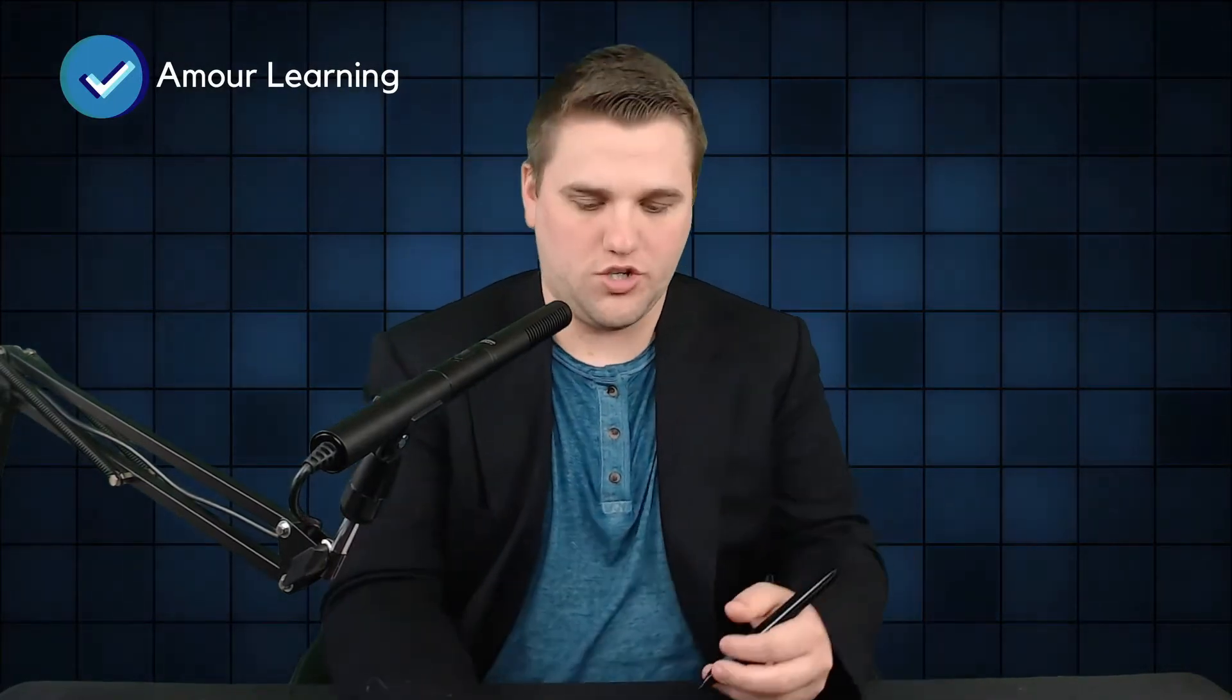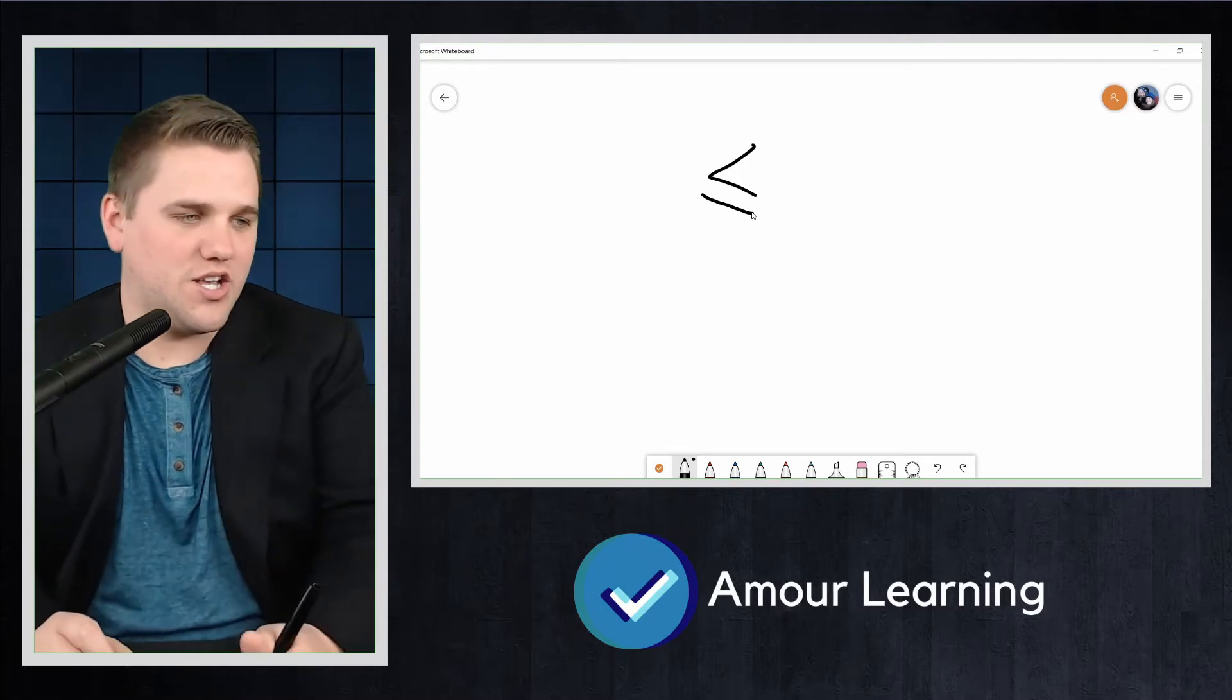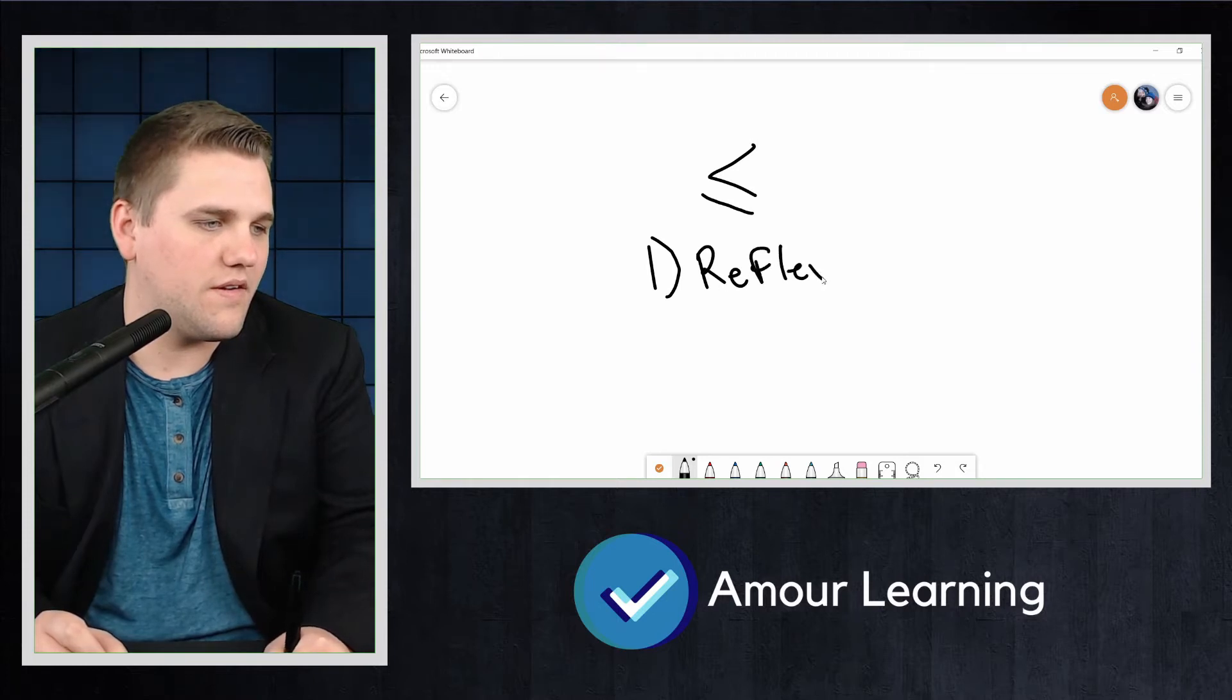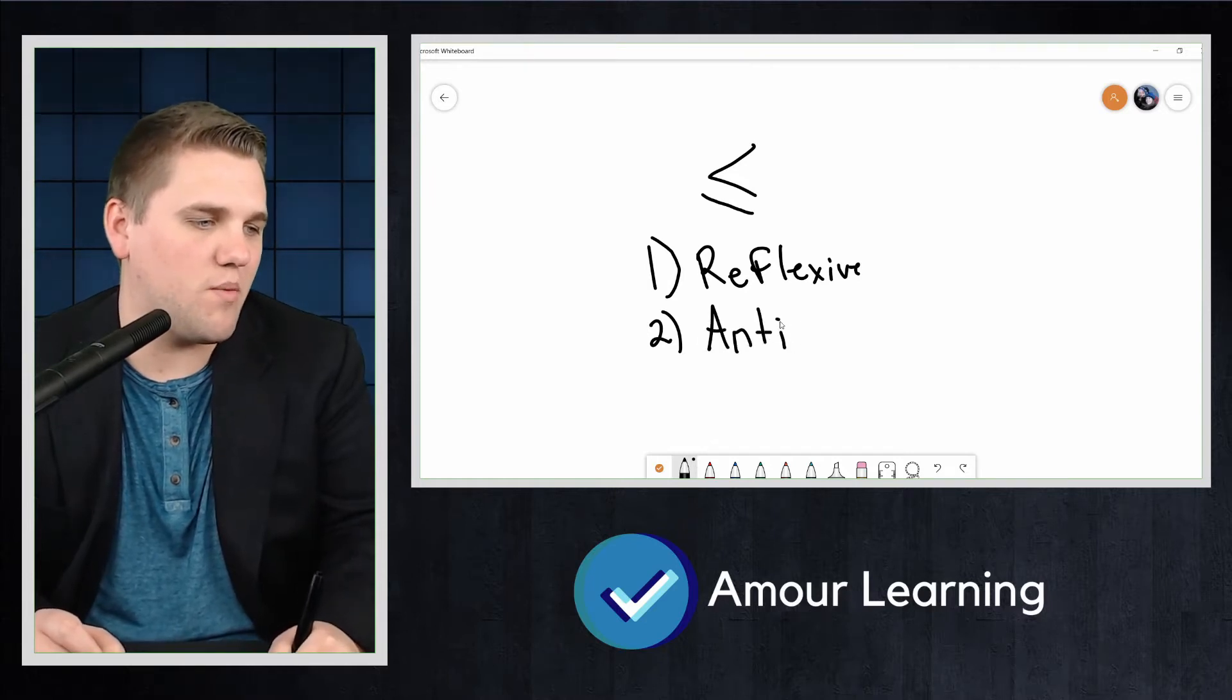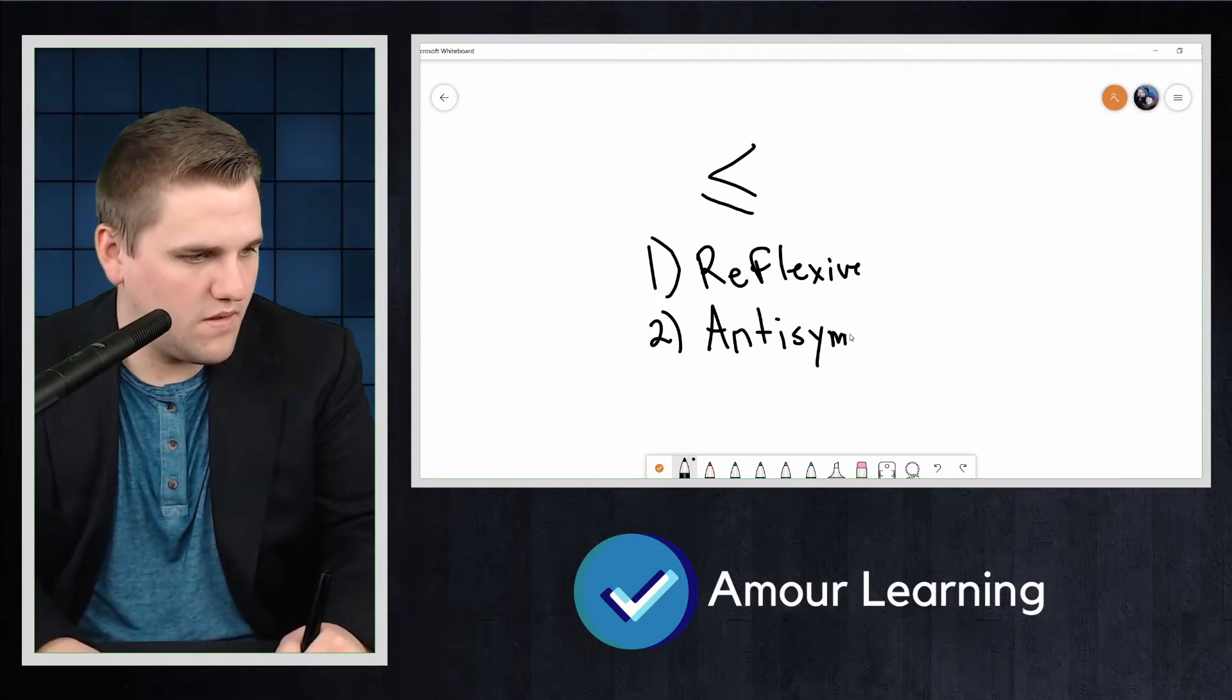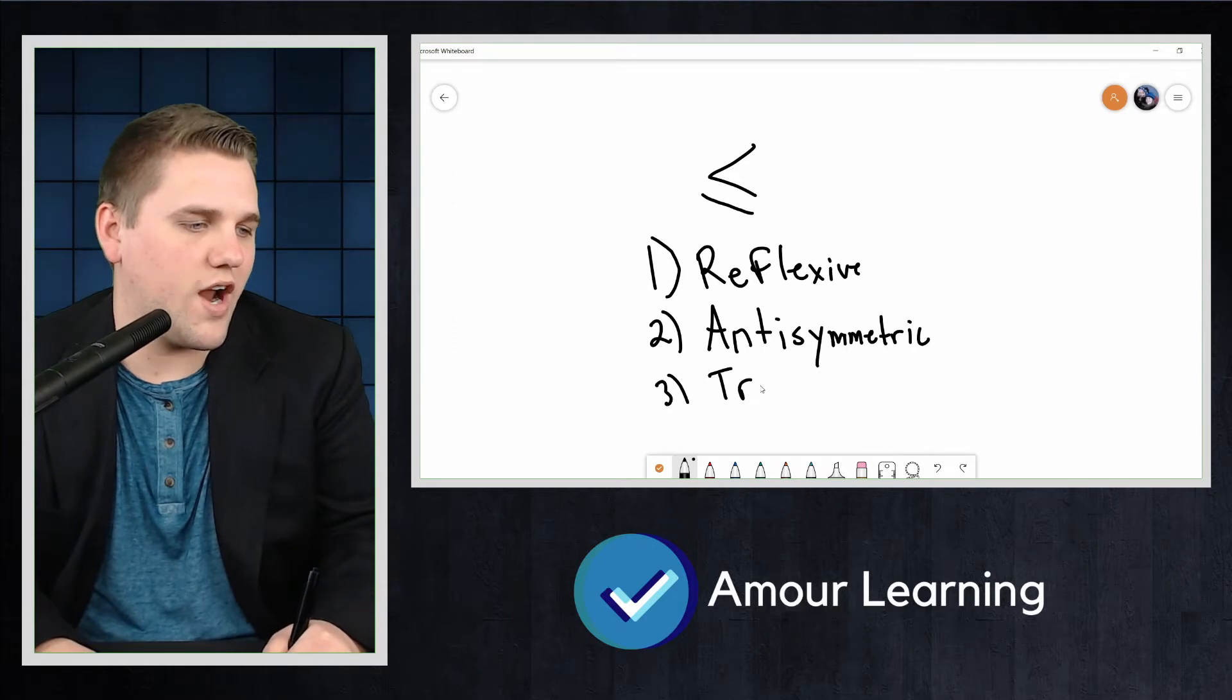Now, technically, the less than symbol is still not a partial ordering, even though it can be used to order elements. Partial orderings implement the binary relation which I'll show you here. This has three properties. The first is it's reflexive. The second is it's anti-symmetric, which we'll talk about in a moment. And the third property is that it's transitive.